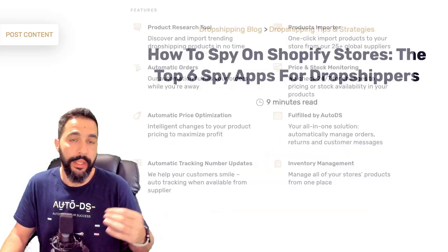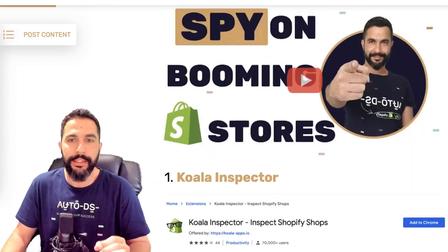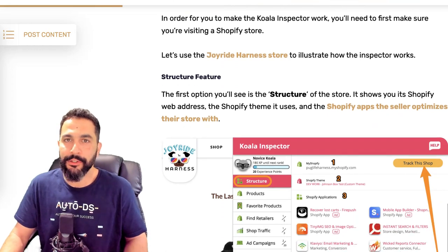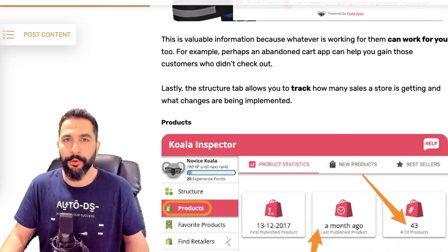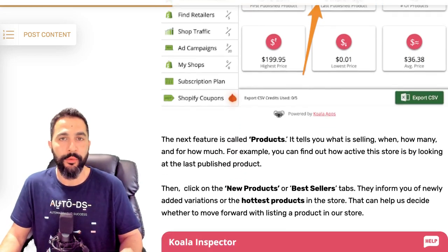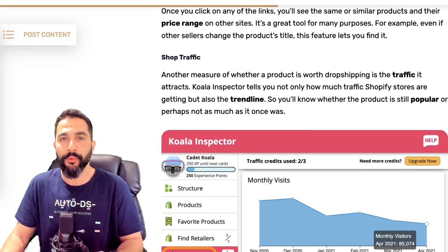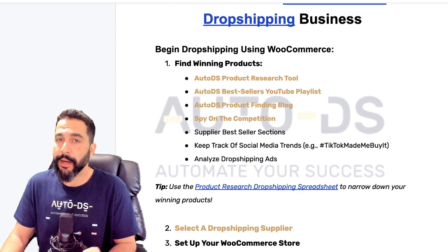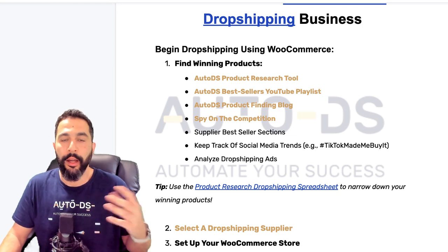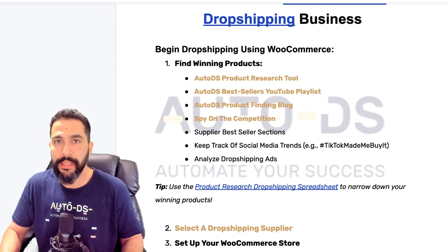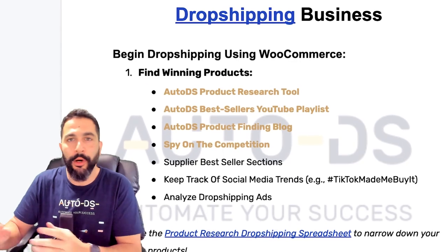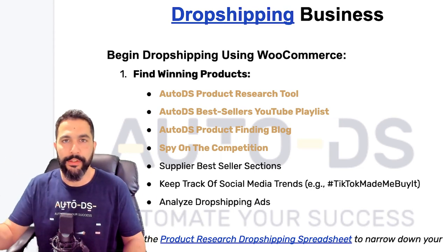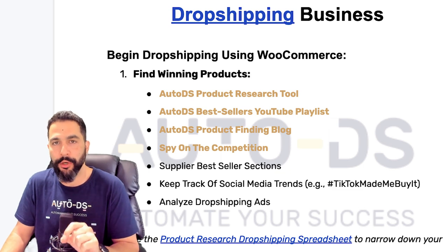Those are the top three product research methods I recommend that don't cost any money and will get you the best product ideas. Number four is spying on the competition — we have a blog article to help you find your competitors, see their stores, know what they sell, see what ads they're running, and learn from their best practices. Number five is checking suppliers' bestseller sections — go to Walmart or the AliExpress dropshipping center to find best-selling products. We also have content on that, so search our YouTube channel or blog for the AliExpress dropshipping center. You can also go to CJ Dropshipping or Walmart to see what's trending.